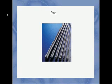A rod is an object with one dimension — it just has the length. You ignore the thickness of the rod and just look at the length of it. It is also rigid, so it does not bend.